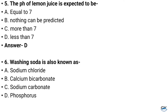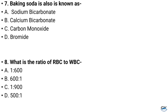Question number 6. Washing soda is also known as — Option A: Sodium chloride, Option C: Sodium carbonate, Option D: Phosphorus. And the answer is Option C: Sodium carbonate.